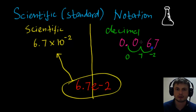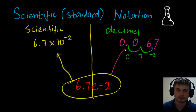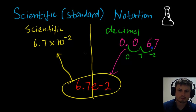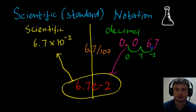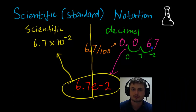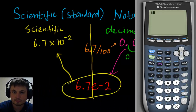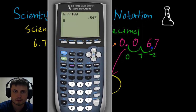If you use your calculator to convert, it will give you exactly the same value. Another way to check: 10 to the power of minus 2 is basically the same as dividing by 100. So you can do 6.7 divided by 100 and check it on your calculator — the answer is 0.067, which is exactly what we have.